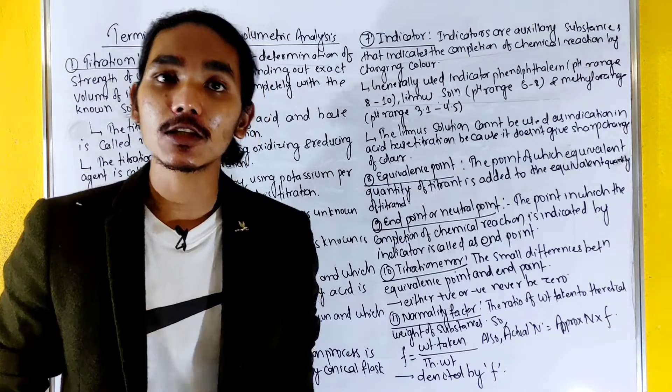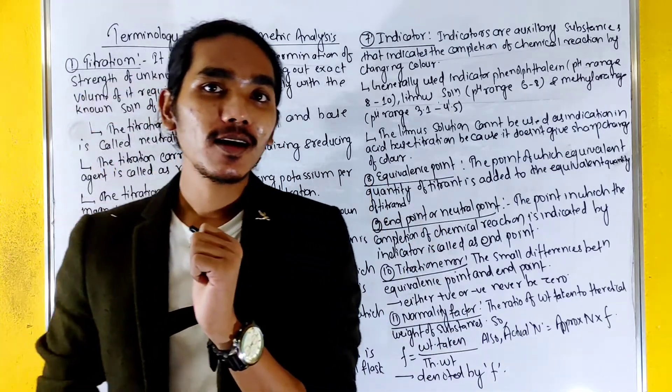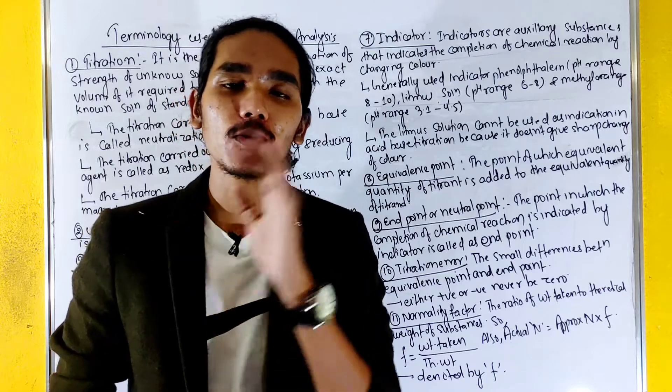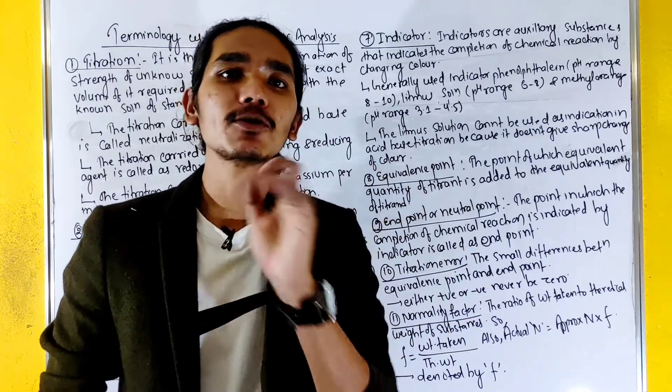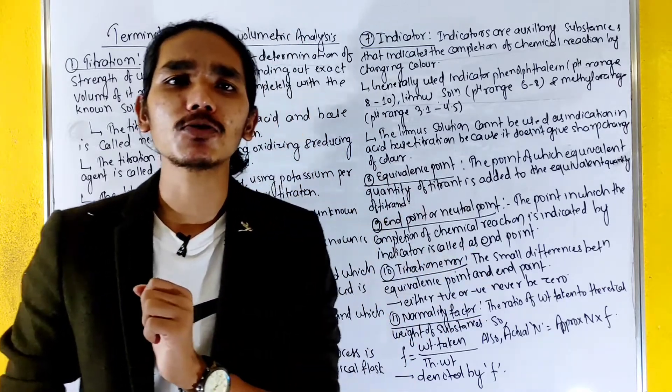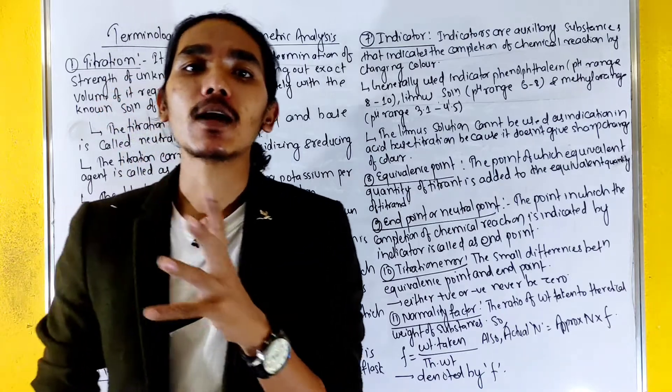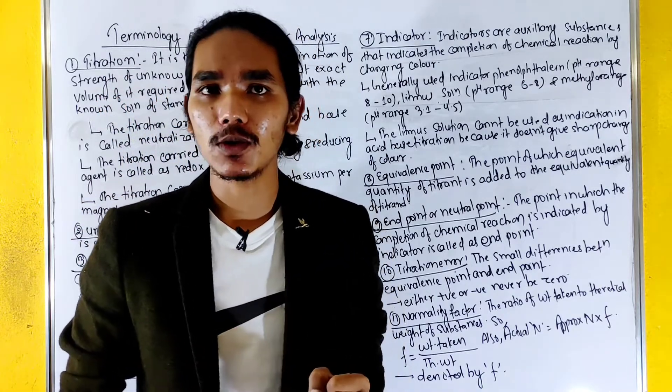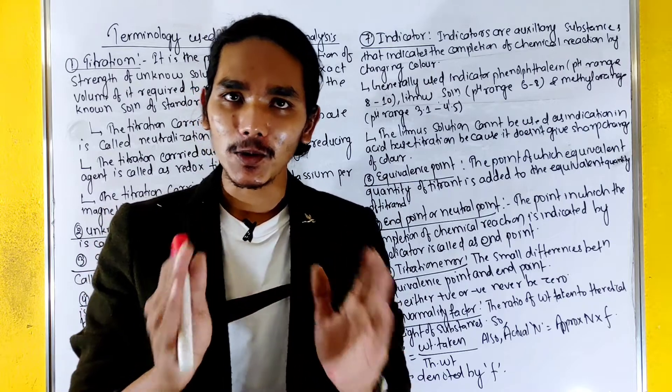How do we get an unknown solution? We use indicators, acid-base indicators like phenolphthalein, methyl orange, litmus paper. We will start using this. Okay, let's start.